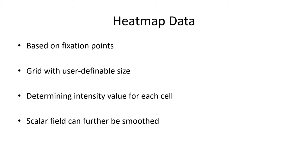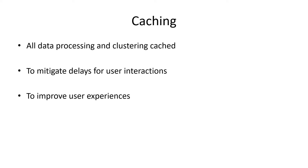Our heatmap data is based on fixation points by defining a grid of a certain user-adaptable size. A value is first determined for each cell to obtain an intensity, which results in a scalar field that can further be smoothed to make it more aesthetically appealing. Before starting the tool, all data processing and clustering is cached. This has the benefit that delays are mitigated to achieve better, more responsive user interaction, which ultimately improves the user experience.